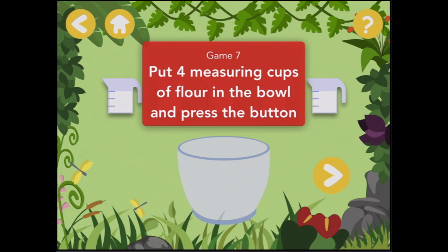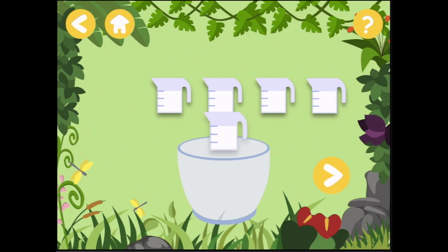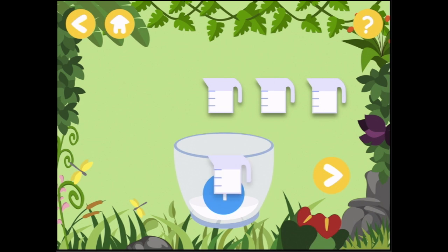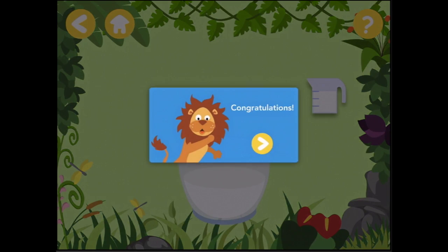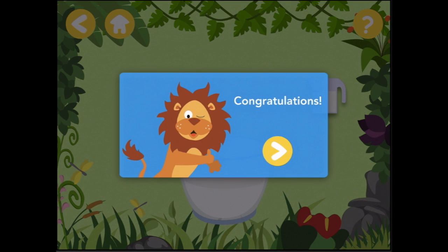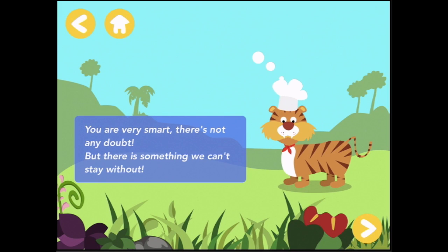Put four measuring cups of flour in the bowl and press the button. Four measuring cups: one, one, two, three, four. And then press the button. Congratulations! Excellent, you are very smart. There's not any doubt, but there is something we can't stay without.